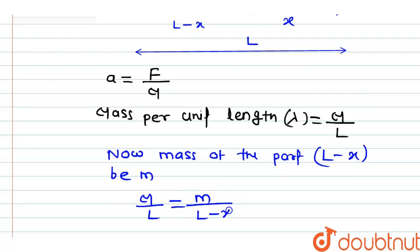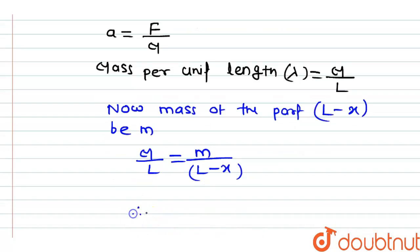Therefore, small m will be equal to capital M by L times L minus x.